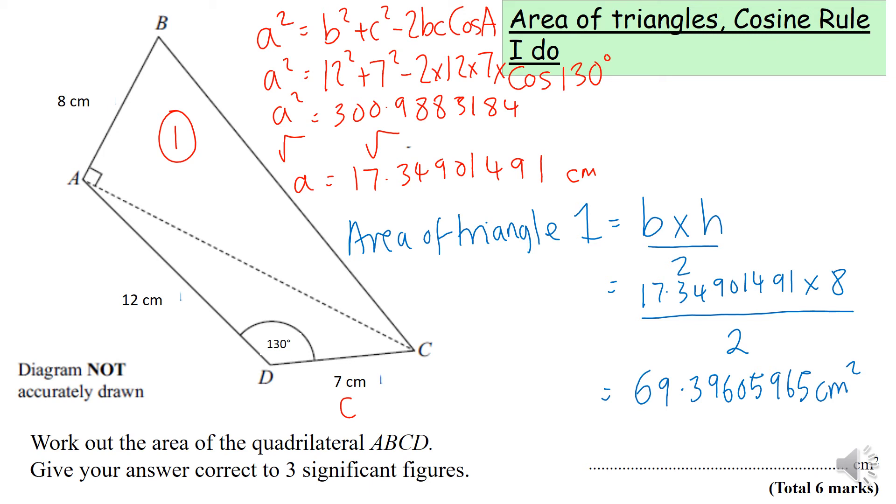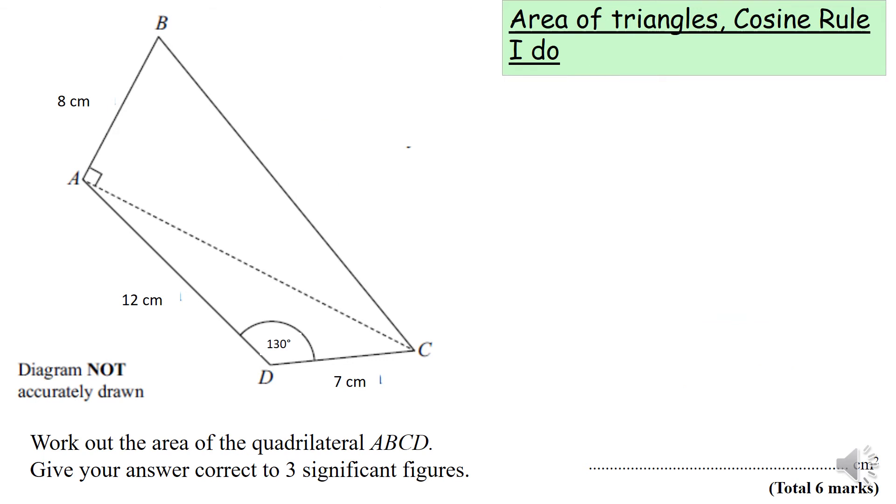This equals 69.3960559965 centimeters squared. That's the area of triangle 1. Now we're going to work out the area of triangle 2. I'm just going to erase the ink on the slide because I need some more space. Here we don't have a perpendicular height.